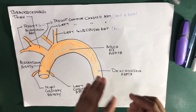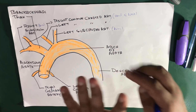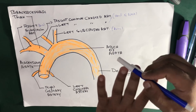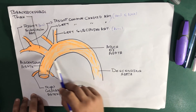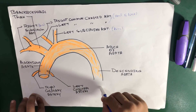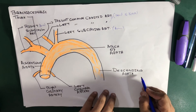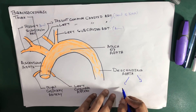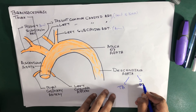We divide the aorta into four parts: the ascending aorta, the arc of aorta, and the descending aorta. The descending aorta is further divided into two parts — the thoracic aorta and the abdominal aorta.